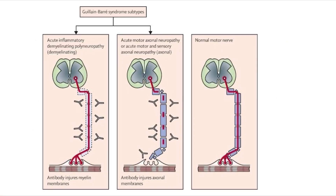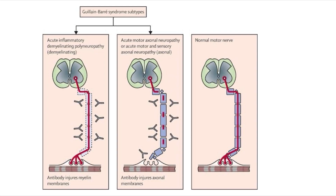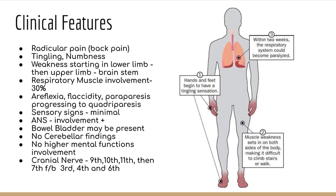In this image, the right side shows a normal motor nerve. In the AIDP panel, cross-reactive antibodies attack the myelin membranes, hence it is a demyelinating polyneuropathy. The middle image shows antibodies attacking the axonal membranes, ultimately leading to AMAN and AMSAN subtypes.